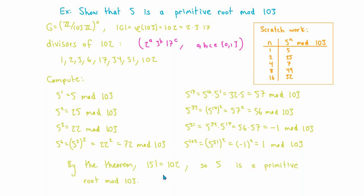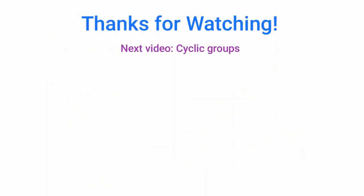As you can see, Lagrange's theorem greatly reduces the number of things you have to check when looking for a primitive root. Before Lagrange's theorem, we would have had to check all powers of 5 up to 102. Now we know the order of 5 must be a divisor of 102, so we can finish the problem after only seven pretty easy calculations. That's the end of this video — we're getting into some interesting material, and in the next video we'll talk more about cyclic groups.